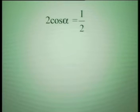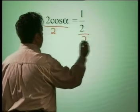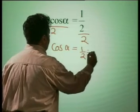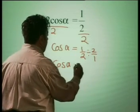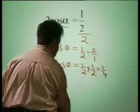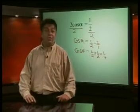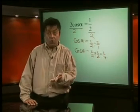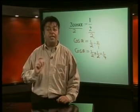For the challenge equation, we need to get cos alpha on its own, so we divide both sides by 2. We get cos alpha equals a half divided by 2, which is a half multiplied by 1 over 2, which becomes 1 divided by 4 — a quarter. So cos alpha equals a quarter, which is the same as 0.25. Now we have an equation we can work out on the calculator.